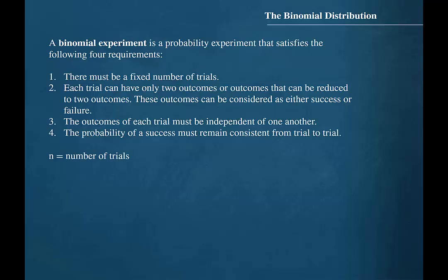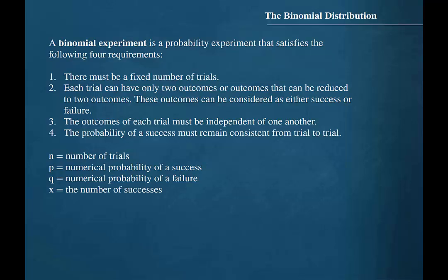We will let N represent the number of trials. P will represent the numerical probability of a success. Q will represent the numerical probability of a failure, which will also be the complement of P. X will represent the number of successes.